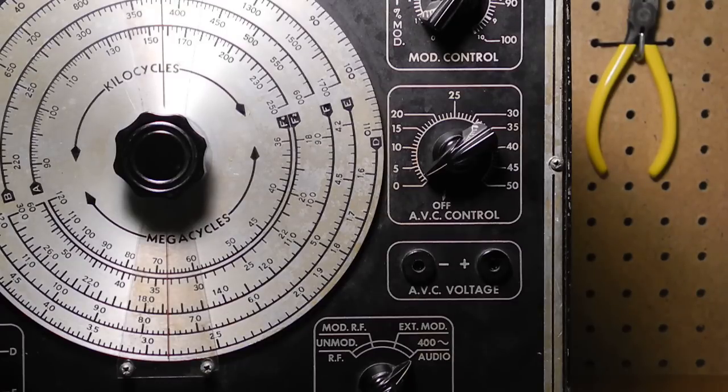It meant using an AVC voltage generated by the signal generator. During alignment, the receiver-generated AVC line would need to be cut temporarily and the generator AVC voltage applied.